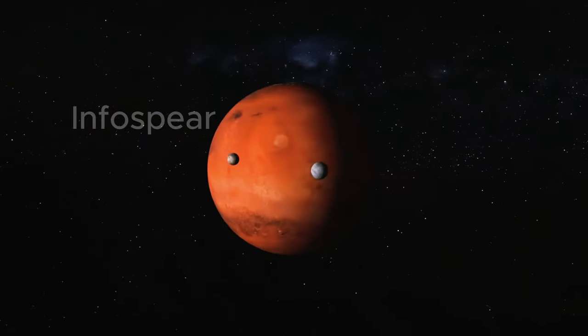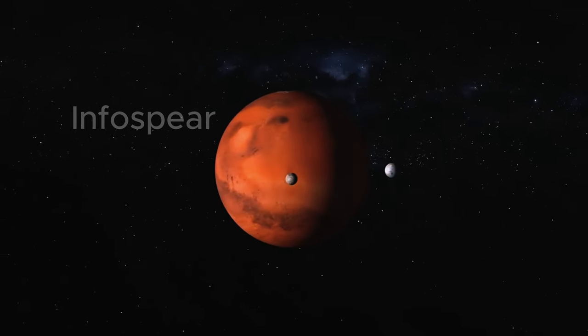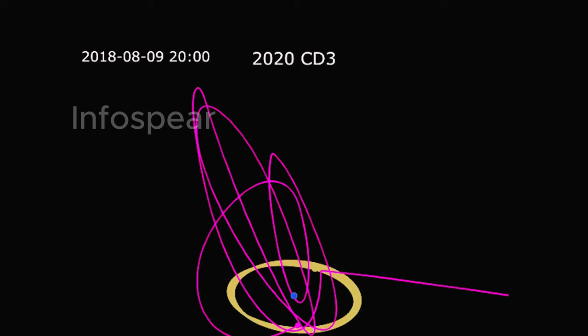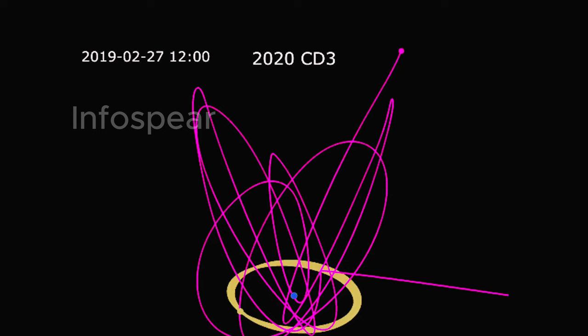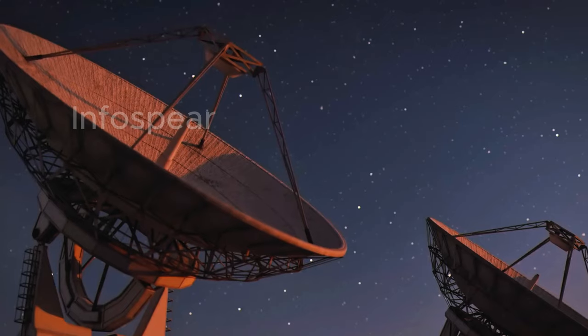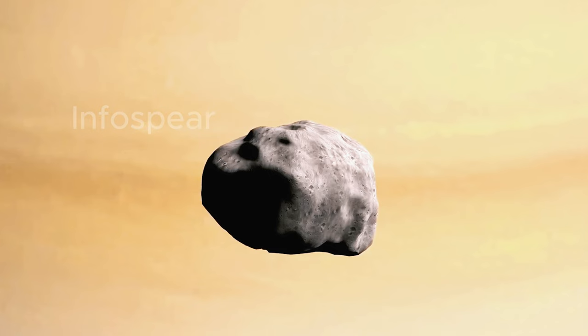If you think mini-moons are a once-in-a-lifetime phenomenon, think again. Earth has played host to several, like 2020 CD3, a mini-moon that orbited us for a while before drifting back into space. Each of these cosmic visitors offer scientists a golden opportunity to gather priceless data on how space objects interact with Earth's gravity. It's like watching a live science experiment unfold right in our cosmic backyard. And here's the kicker.